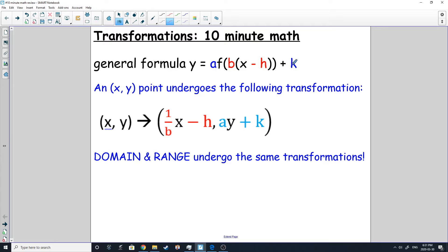The A and the K are going to affect the Y value. I've taken an XY point and I'm showing you what each transformation does. If there's a number in front here, it's going to multiply your Y values. And if you have a number out here, you're just going to simply add it to your Y values.